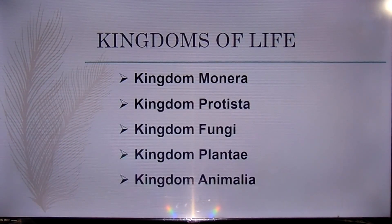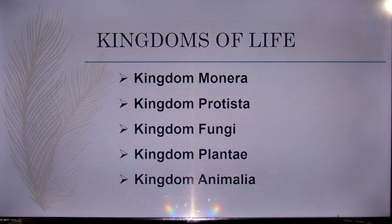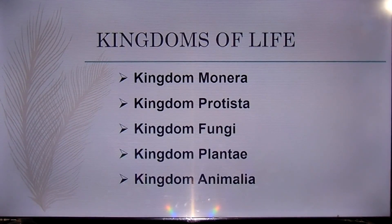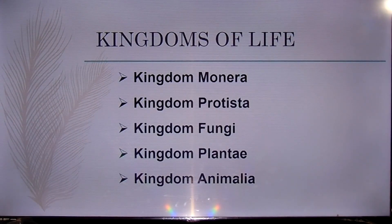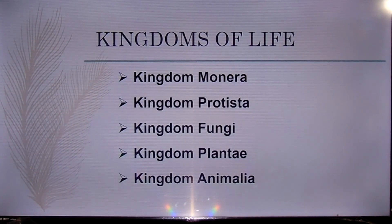Kingdom Protista consists of phototrophic or heterotrophic, unicellular or multicellular eukaryotes without highly specialized tissues. Based on molecular studies, protozoans were also included in this group, and the kingdom is now named Protoctista.